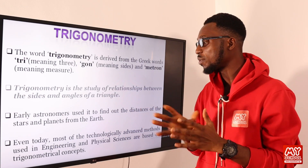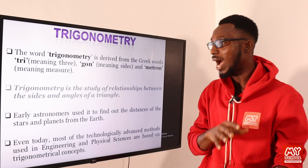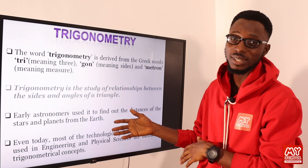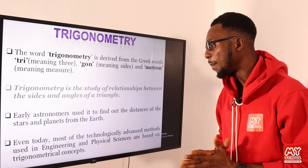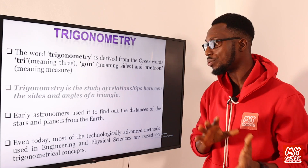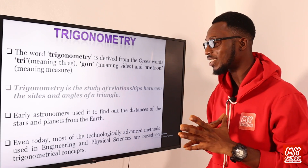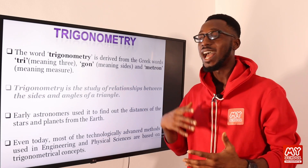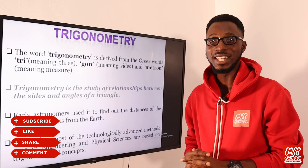Earlier astronomers used trigonometry to find the distances of the stars and planets from the Earth. These are just daily life applications. Even today, most of the technologically advanced methods used in engineering and physical sciences are based on trigonometrical concepts. We also see typical applications as well. Let's move to the next slide.